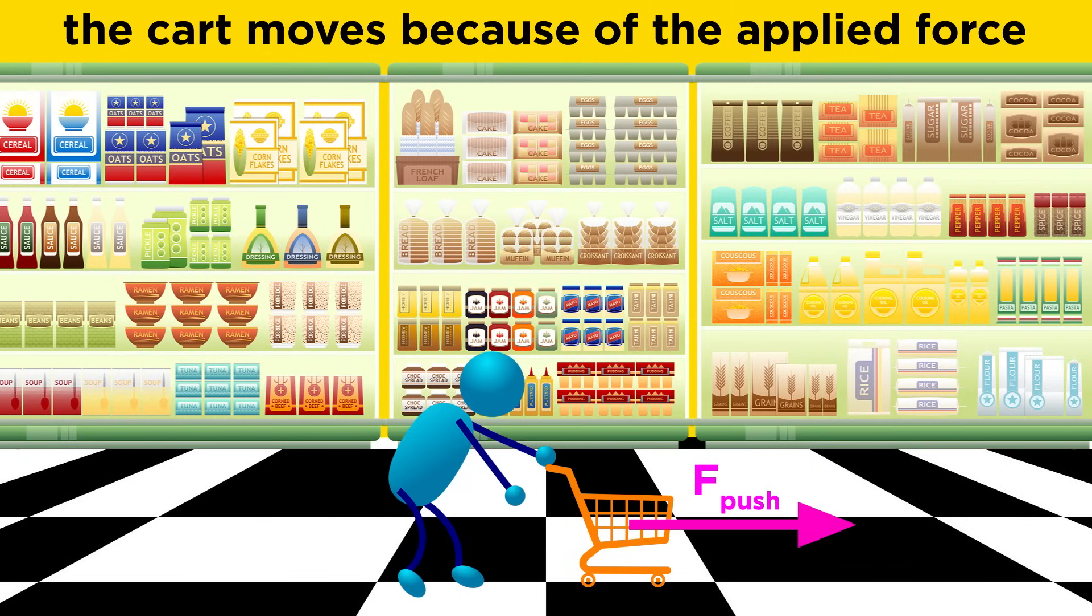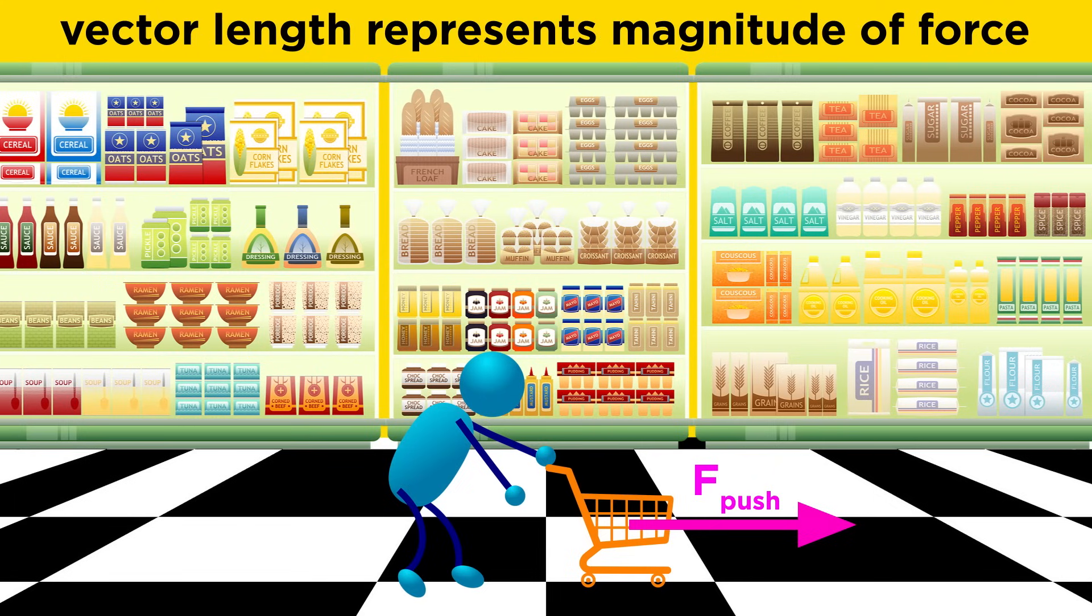This force vector, which begins at the center of the cart's mass, points in the forward direction and also has a particular magnitude depending on how quickly you want to get your shopping done, and this magnitude will be represented by the length of the vector.